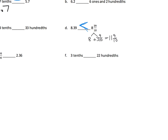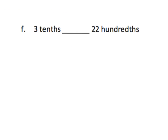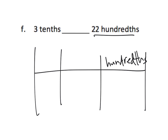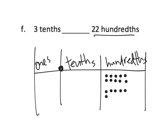Last one: let's compare three tenths and 22 hundredths. Let's take a look at 22 hundredths first. Thinking about a place value chart with hundredths, tenths, decimal, and ones — if you had 22 hundredths, that means you've got ten, and another ten, and then one, two — so there is our 22 hundredths.